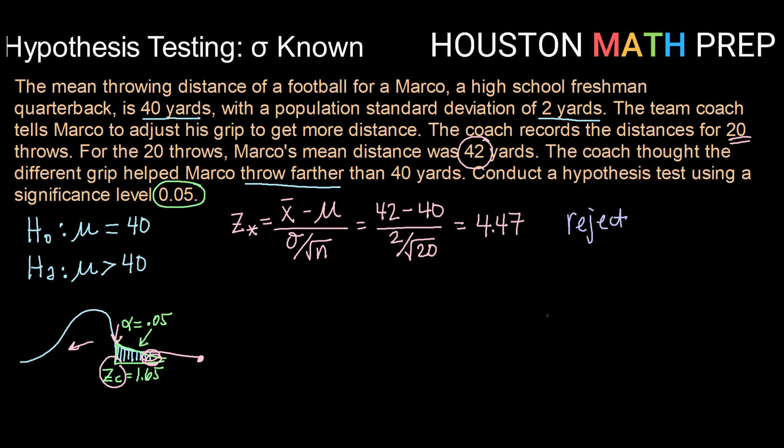Once we've made that decision, we need to state our decision in the context of the problem. And there's kind of a script for this. It goes the same way each time. We're either going to say there is sufficient evidence to reject or there is not. Since we are rejecting, we're going to say there is sufficient evidence to reject the null hypothesis.